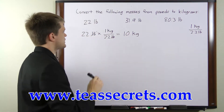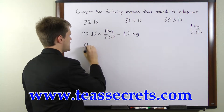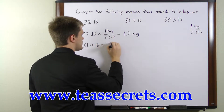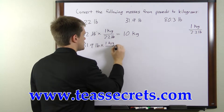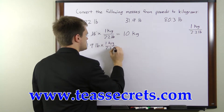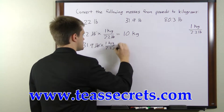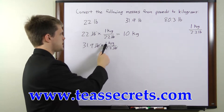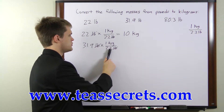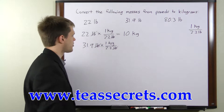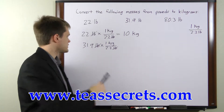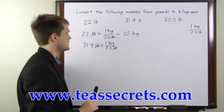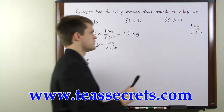In the second example we have 31.9 pounds, and we'll multiply it by the same conversion factor, 1 kilogram per 2.2 pounds. The pounds will cancel once again, and we're left with 31.9 times 1 kilogram over 2.2. Now it's not immediately obvious what 31.9 over 2.2 is going to be, so we're going to have to do some long division.